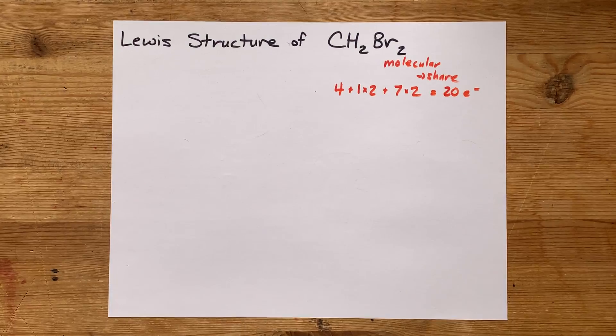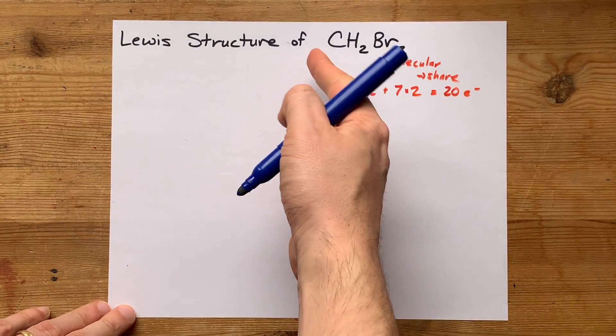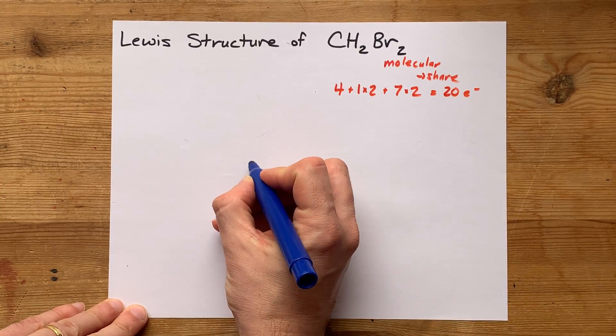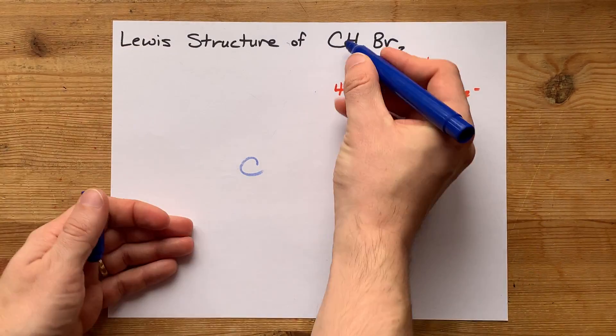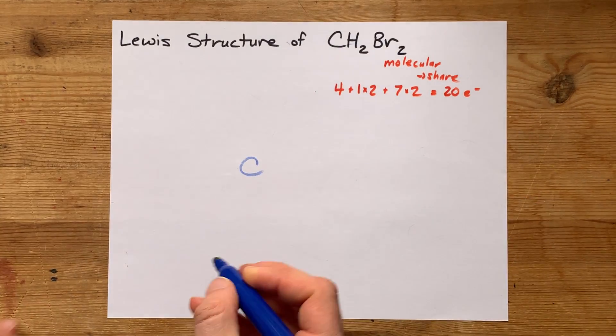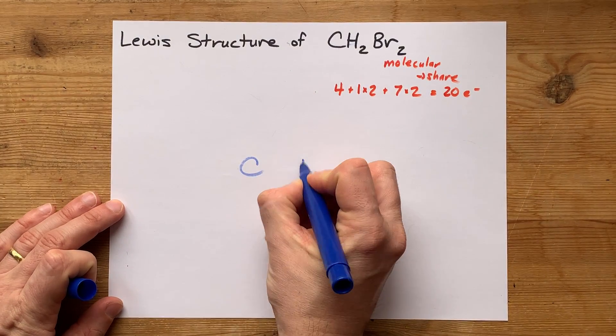I'm going to put my central atom in the center. And the atom here that can make the most bonds is carbon. Generally, hydrogen and bromine prefer to have one bond each. So I'm going to put the carbon in the center,